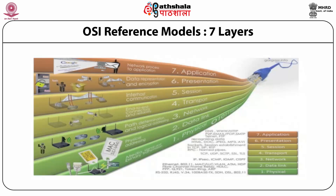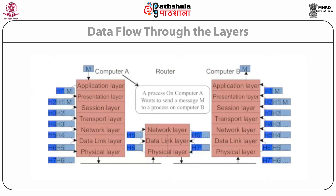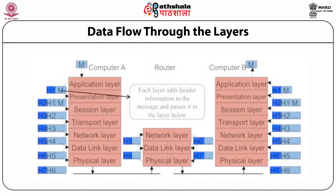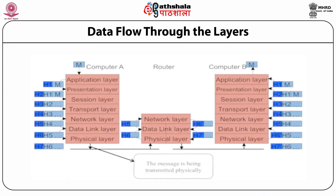This is how layers work in the OSI model. Let me recap the data flow. M stands for the message being passed from computer A. A wants to send message M to computer B. B is on the right side, A is on the left, and there is a router in between. The router works with three layers: physical, data link, and network. Computers work with all seven layers. Each layer adds a header — H1, then checksum, then H3, H4, H6, H7 — and the message is physically transmitted.